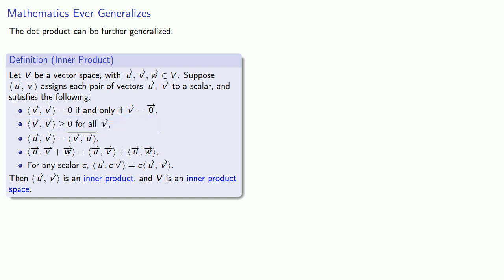These first two requirements are usually bundled as a single requirement. Next, we want the inner product of u and v to be the conjugate of the inner product of v and u.